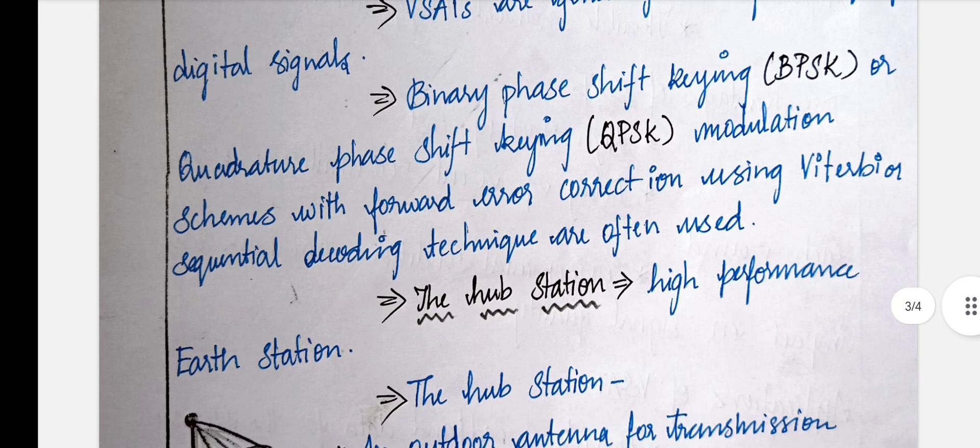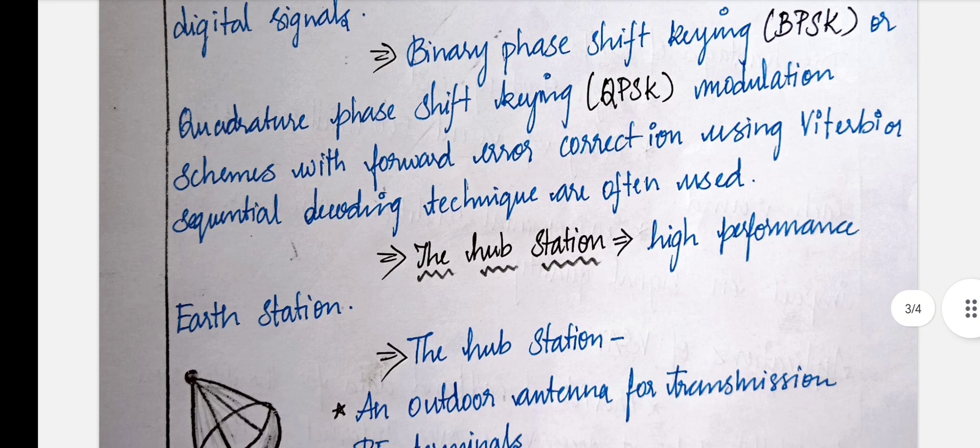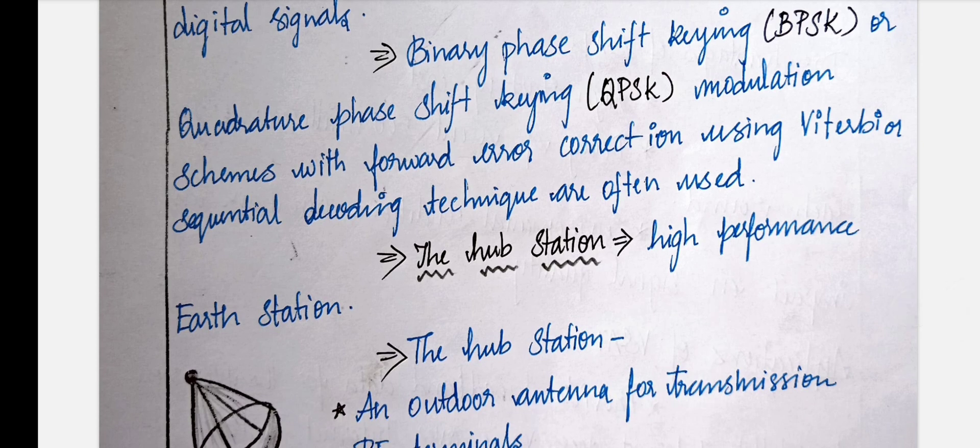It uses two types of modulation: one is Binary Phase Shift Keying and the other one is Quadrature Phase Shift Keying modulation schemes. Forward error correction using Viterbi or decoding techniques are used with these types of modulations.